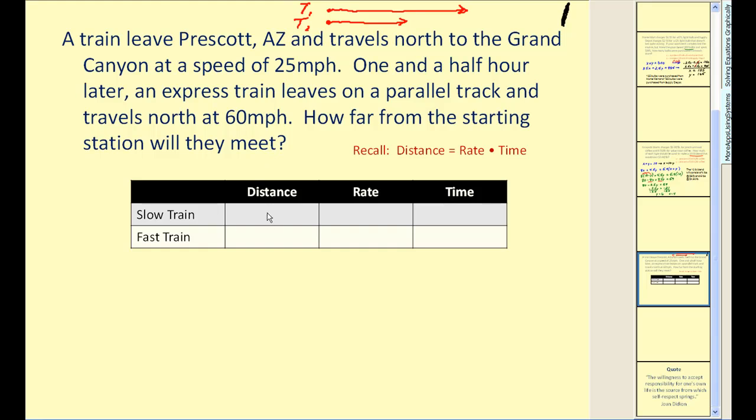So let's set this up. In either case, we don't know the distance. So for the slow train, I'll call this distance one, d sub one. The rate is 25 miles per hour. We don't know time, so we'll set time equal to t. Now for the faster train, again, we don't know the distance, so we'll call it d two. But we should recognize that when they meet, d one will equal d two. The rate of the faster train is 60 miles per hour. However, since this train is leaving one and a half hours later, we must represent the time as t minus 1.5. Since this train has one and a half hours less time than train one, we have to represent the time as t minus 1.5. So our first equation is d equals 25t, and our second equation is d equals 60 times t minus 1.5.